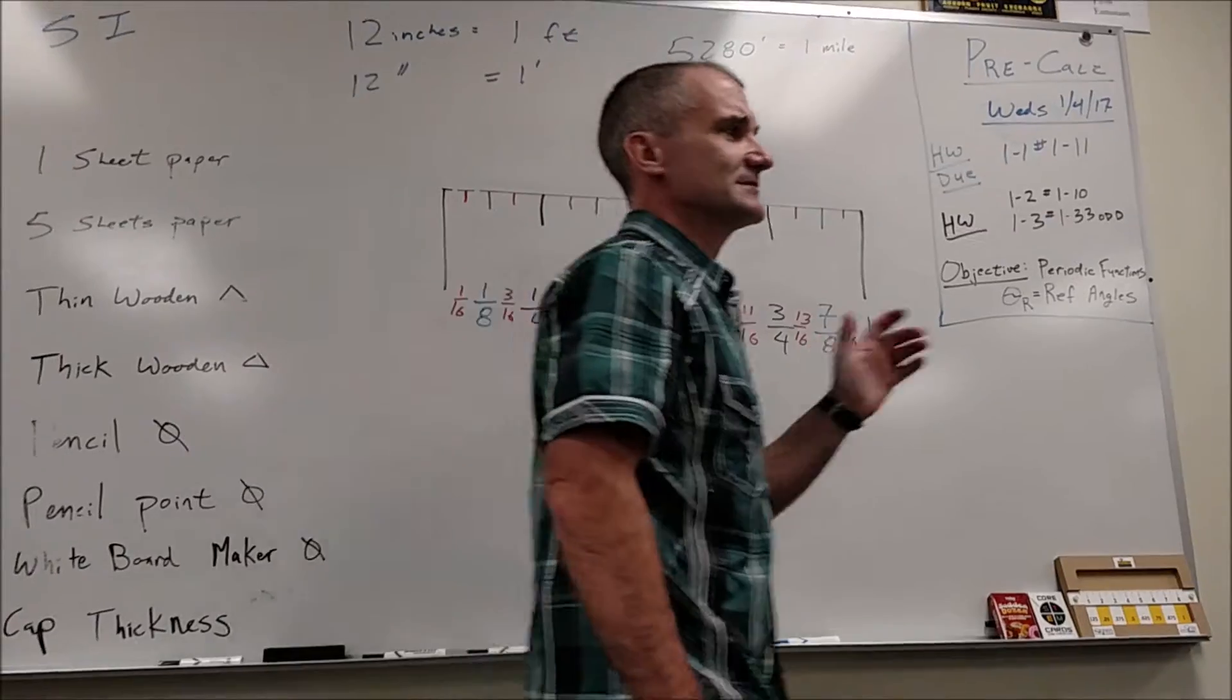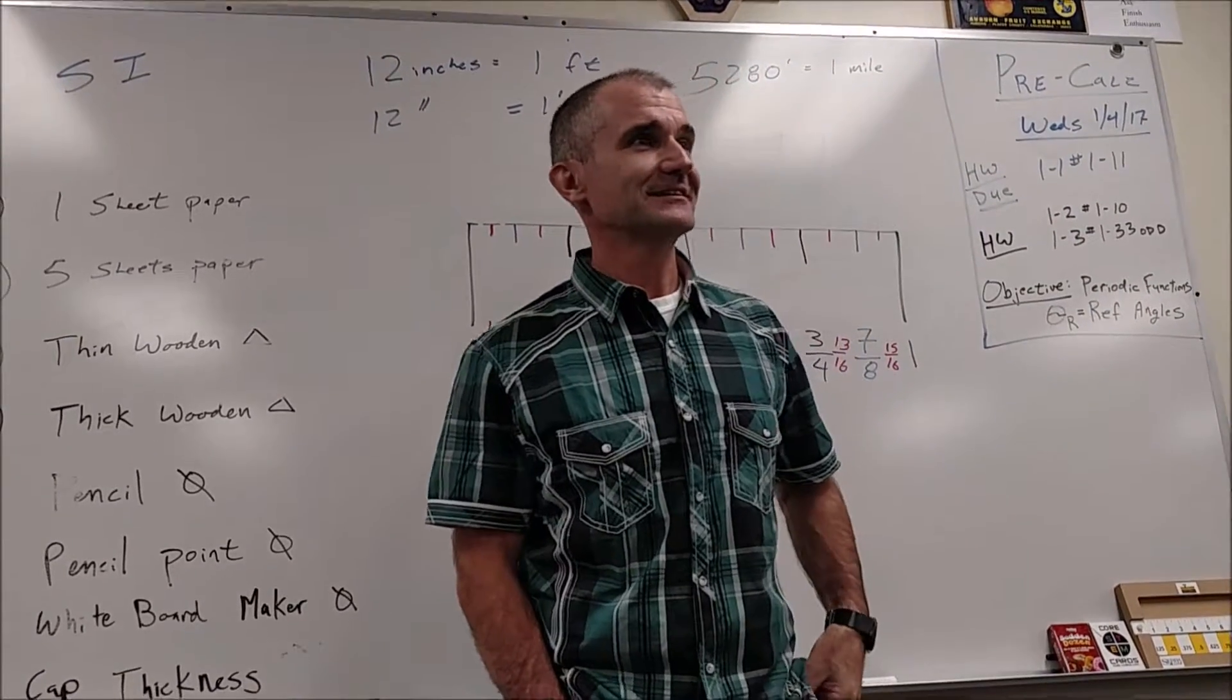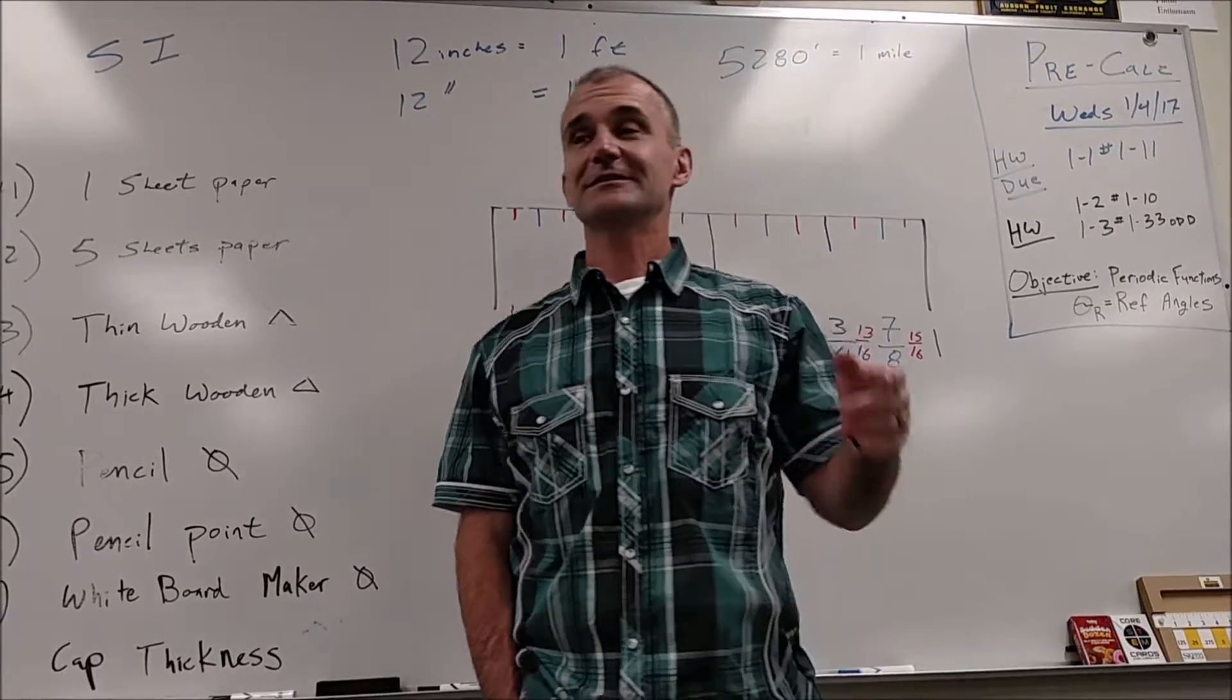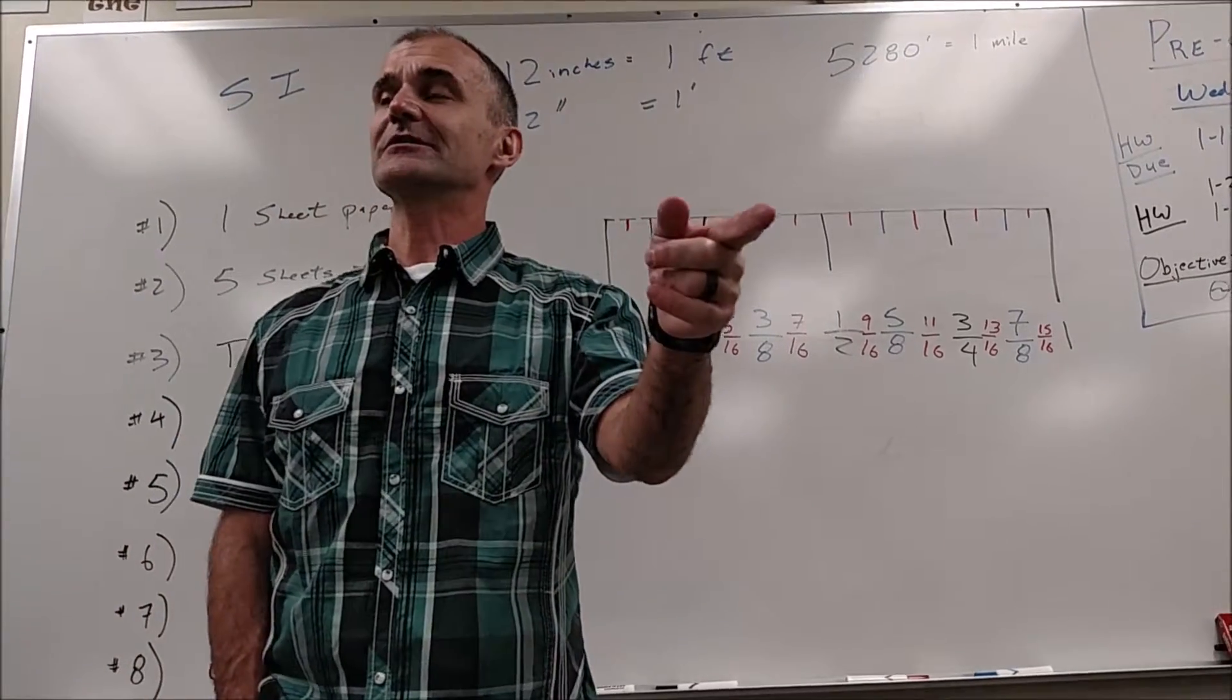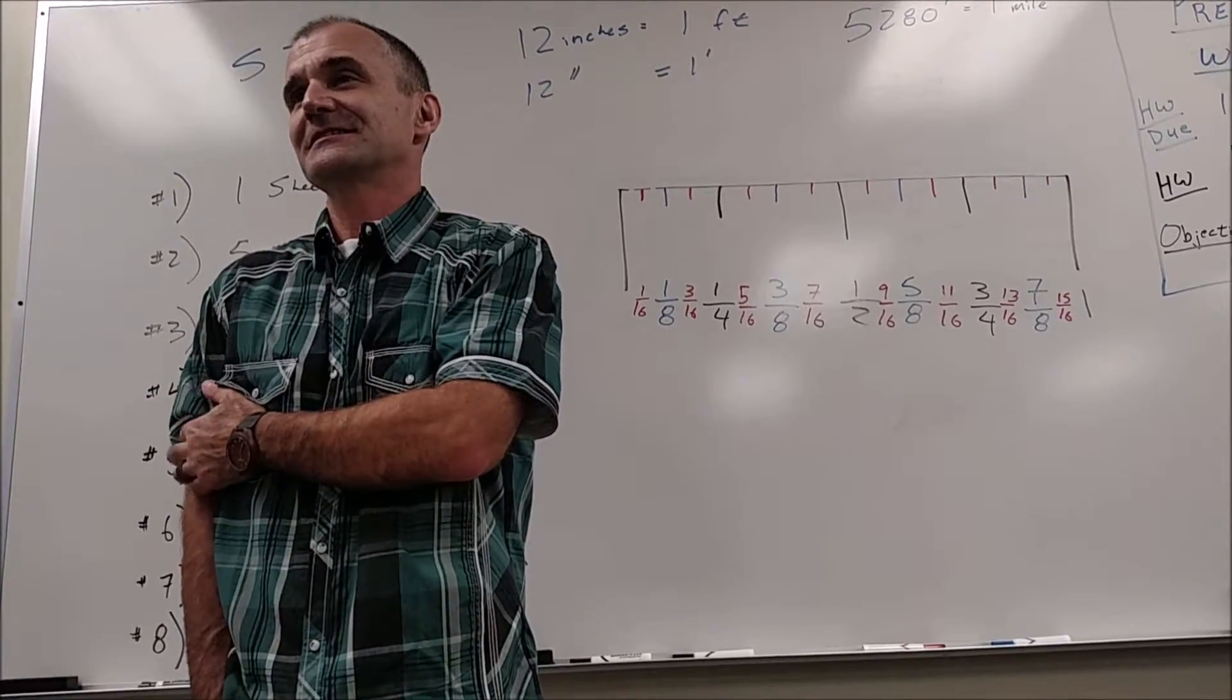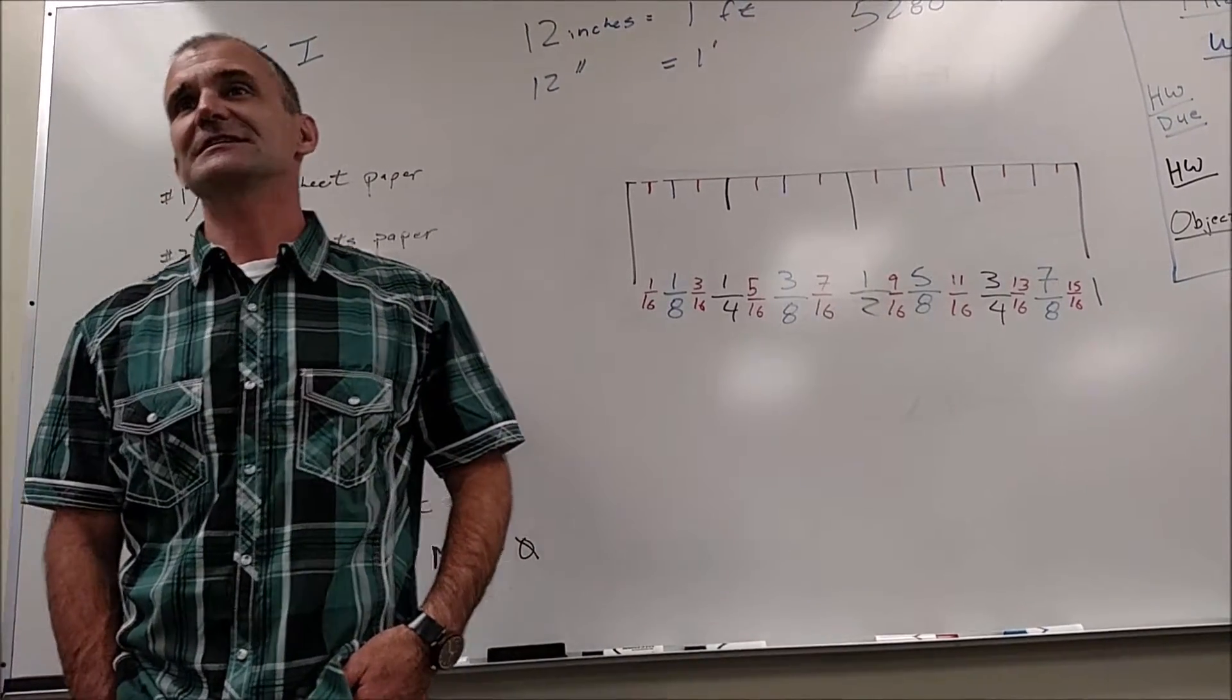What we're going to do now is count out by sixteenths. Vic? One eighth. Gentry? Three sixteenths. Elise? A fourth. Alex? She said a fourth, which is four sixteenths, so you're five sixteenths. Justin? Yeah, that's exactly right, three eighths. Seven sixteenths.